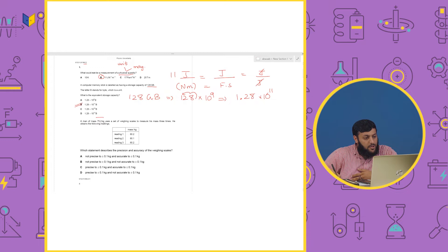Then, we have, a man of mass 75.2 kilograms uses a set of weighing scales to measure his mass three times. So, the mass reading is okay. And the reading is okay.